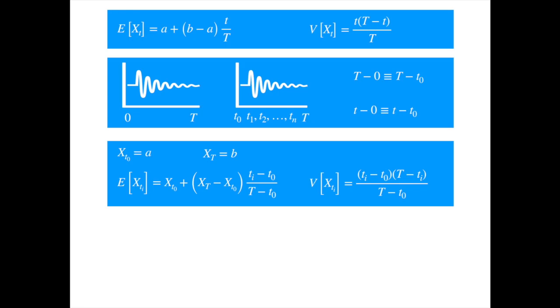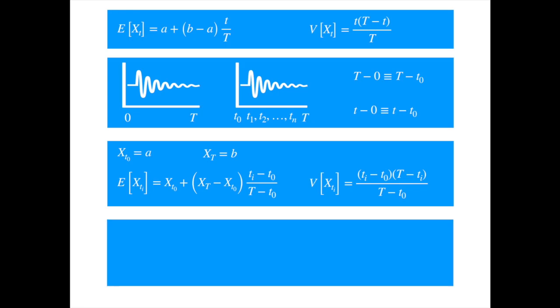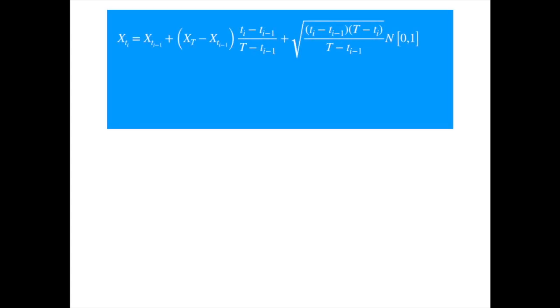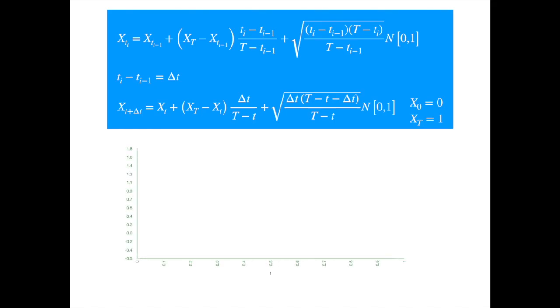As X is normally distributed, we can write the solution in terms of a normal variable. We know from the previous videos that this representation has the same mean and variance as the solution of the process. If we further assume that the interval between the points is Δt, then the equation can be recast to give the value of the process after an interval Δt. This can then be used to generate the values of the process recursively, starting with the initial value. Let's generate a few simulations of the Brownian bridge between 0 and 1.